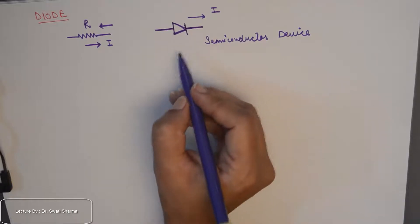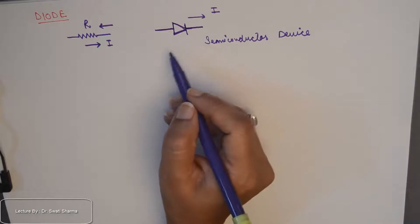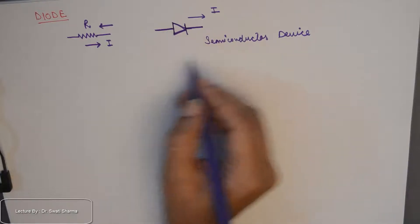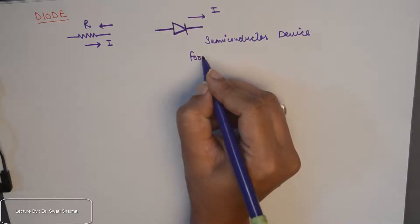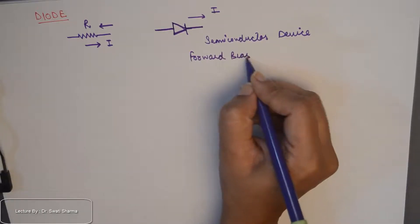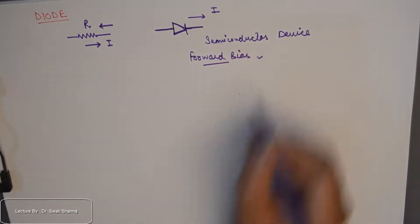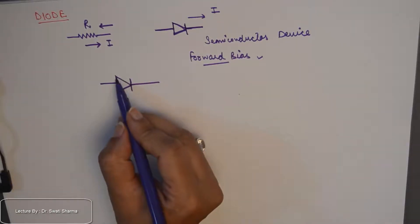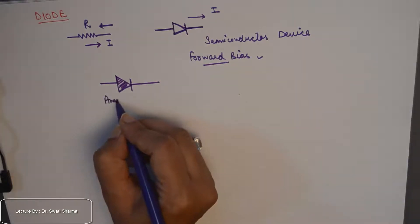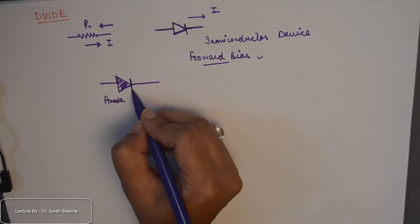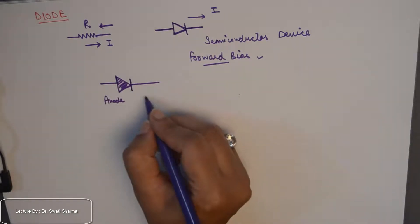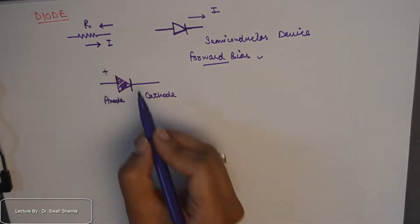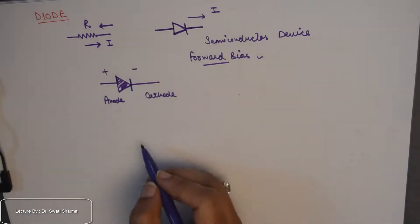A diode can be applied with voltage in two different ways. One is that the diode is given a forward bias. Looking at the symbol of a diode, it consists of two components: the triangular portion, which is the anode of the diode, and the vertical line, which is the cathode. The anode has a positive polarity and the cathode has a negative polarity.